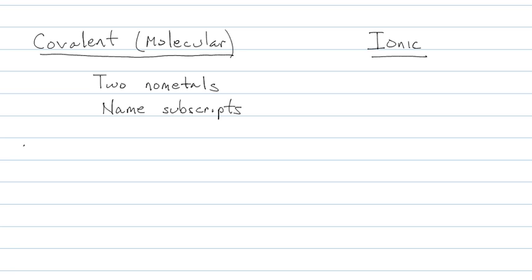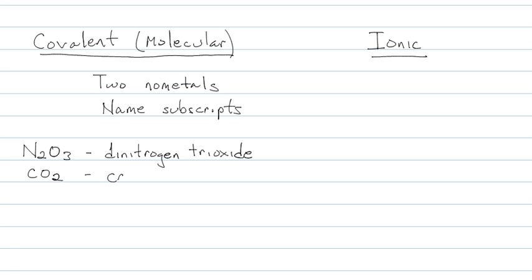So if we have an example, N2O3, this would be called dinitrogen trioxide. Step one is you have to look in the periodic table and make sure you recognize that N and O are on the nonmetal side. CO2 — two nonmetals — carbon dioxide.